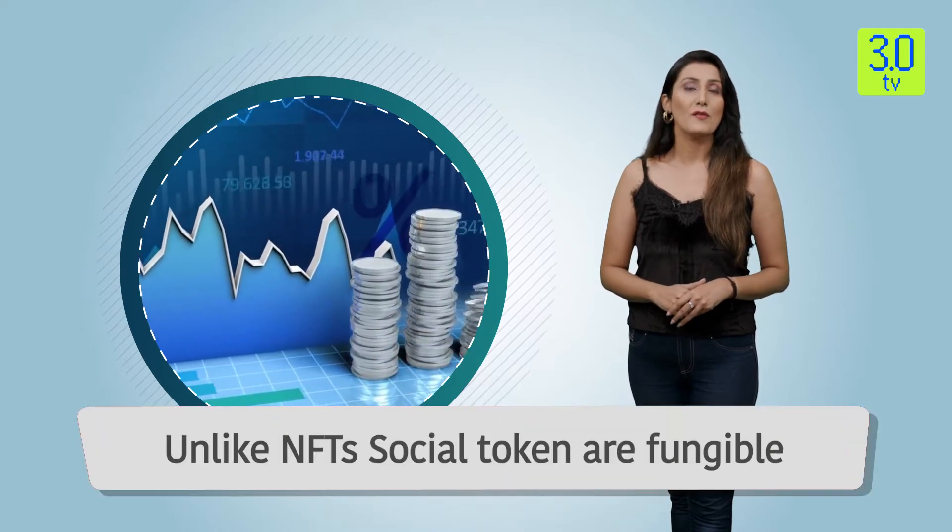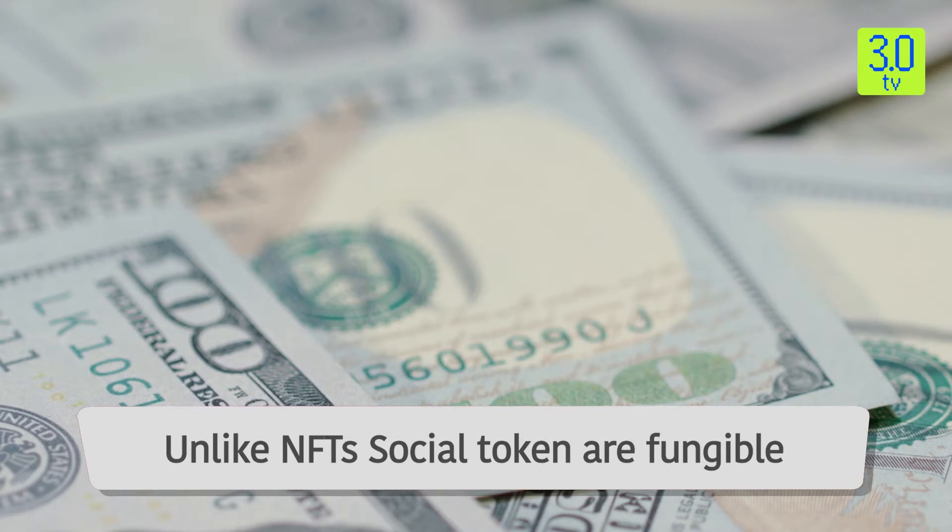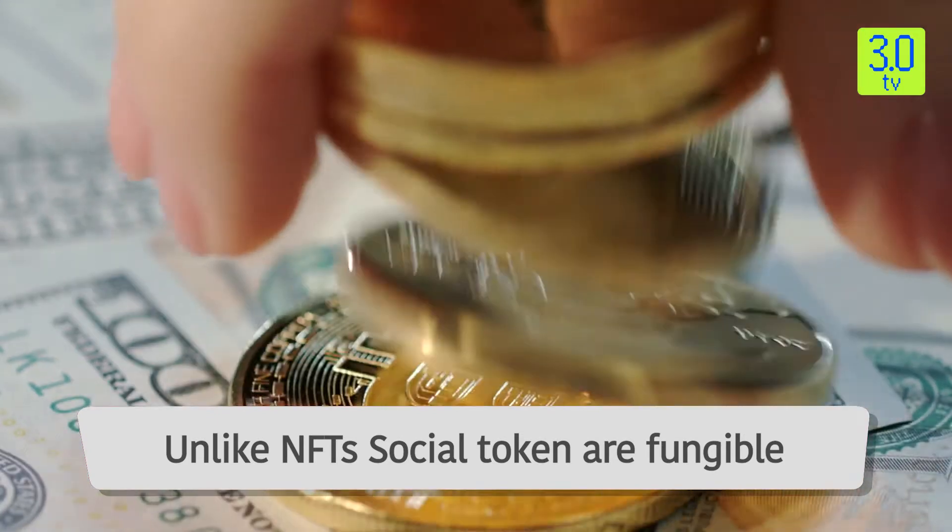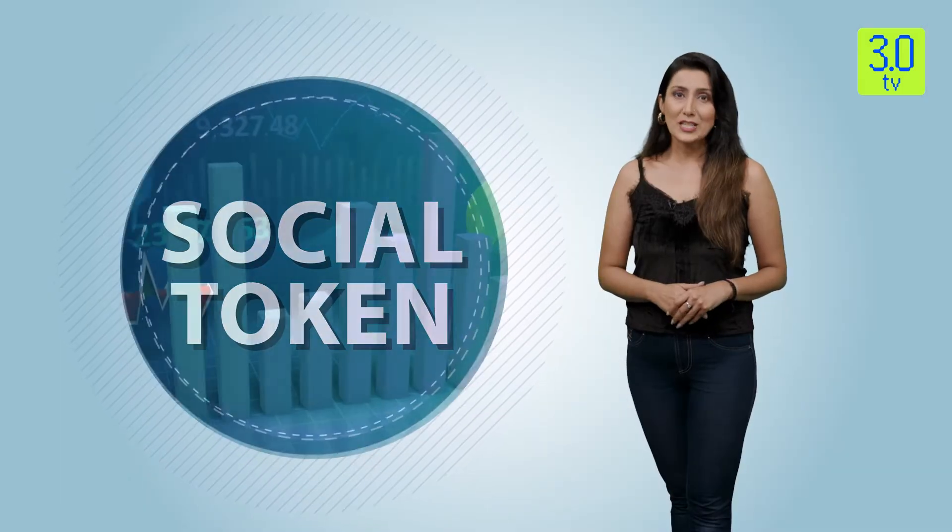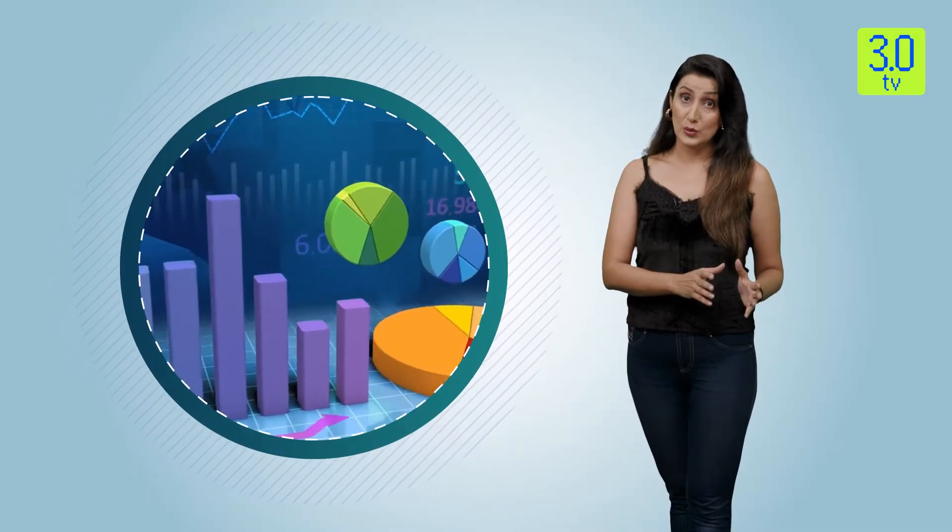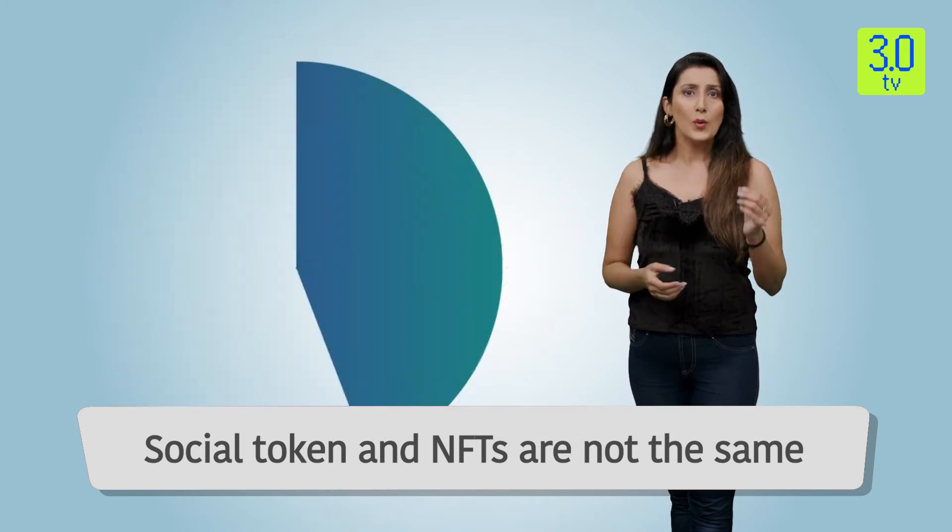Social tokens on the other hand are fungible. Each unit of a social token has the same value as another, just like a currency or cryptocurrency such as Bitcoin or Ether. So each Bitcoin will be the same in value as the other and so it is easily interchangeable.